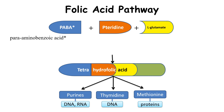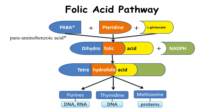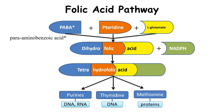First, para-aminobenzoic acid, also known as PABA, needs to combine with pteridine and L-glutamate to form dihydrofolic acid. Then dihydrofolic acid reacts with NADPH to form tetrahydrofolic acid, which acts as a precursor for DNA, RNA, and protein molecules.